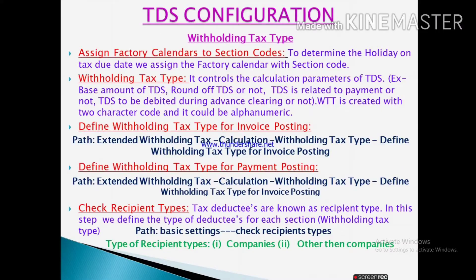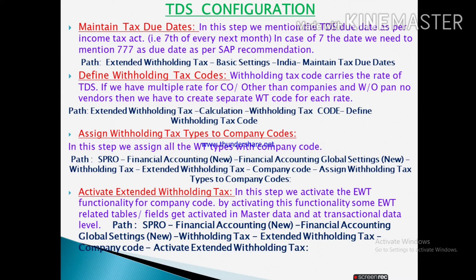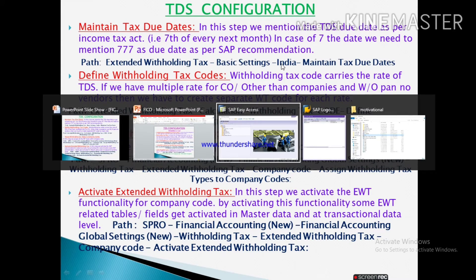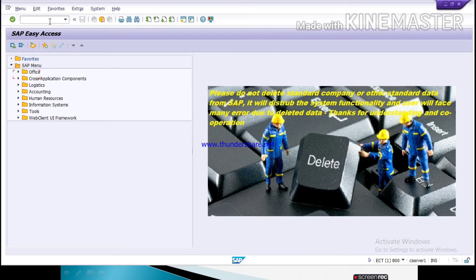The next step is to maintain tax due dates. In this step we maintain the TDS due date as per the Income Tax Act — the 7th of every next month. As per SAP recommendation, you maintain this as triple seven. If your TDS due date is different, such as the 5th, you can enter that date instead. Now go to SAP and maintain the tax due date using T-code SPRO.